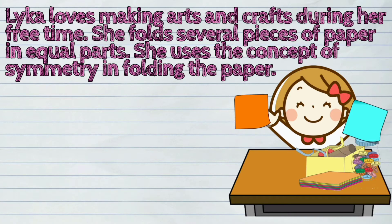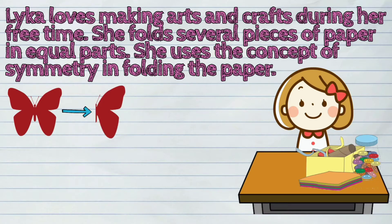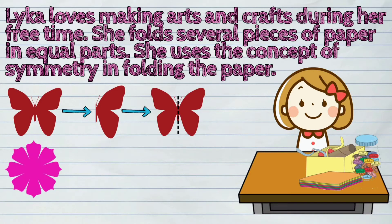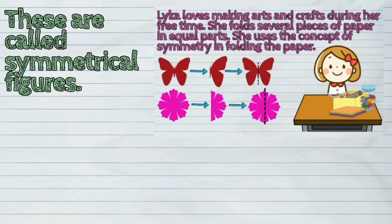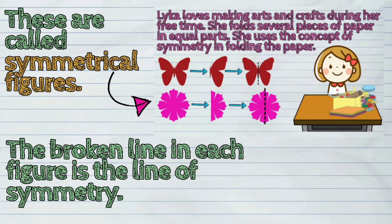Here are some of Laika's folded papers. These are called symmetrical figures. The broken line in each figure is the line of symmetry.